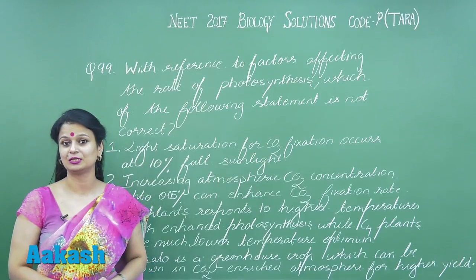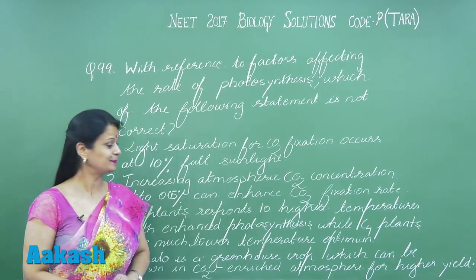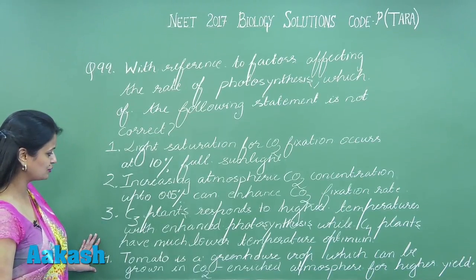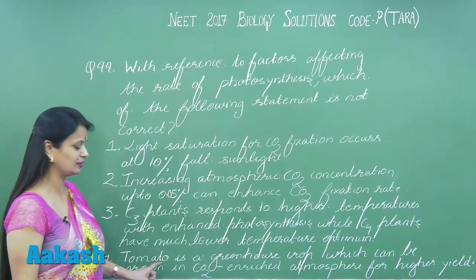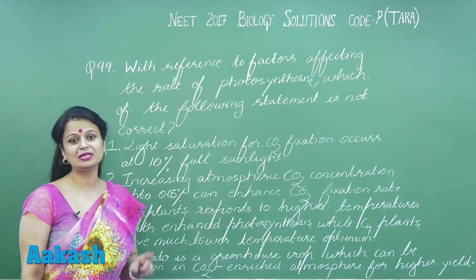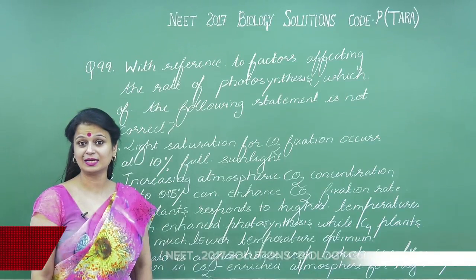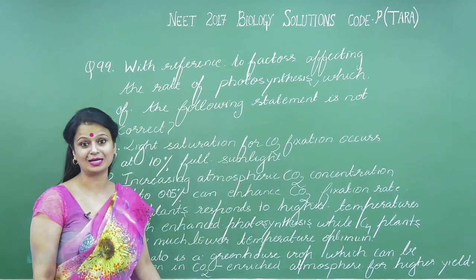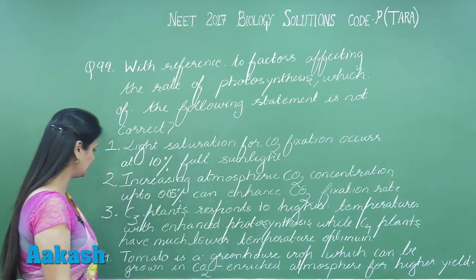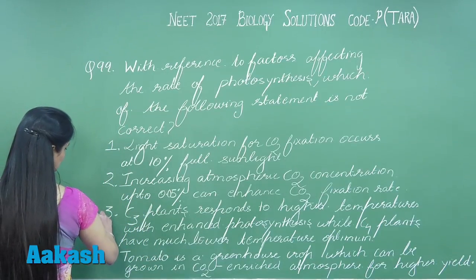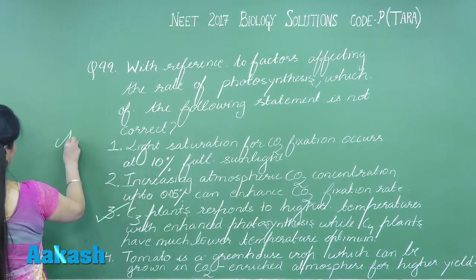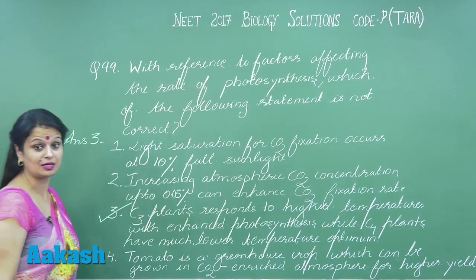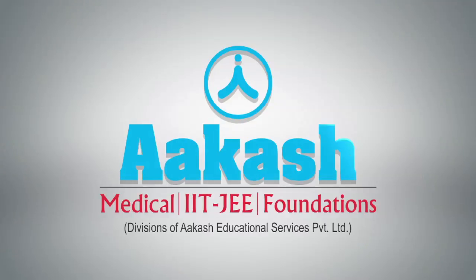Coming to the fourth option: tomato is a greenhouse crop and a C3 plant. If we increase the concentration of carbon dioxide, this will surely increase the yield of tomatoes, so this option is correct. Therefore, the incorrect option is option number three — the answer is three.